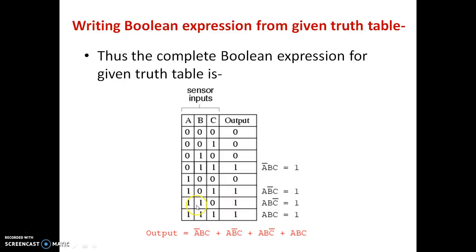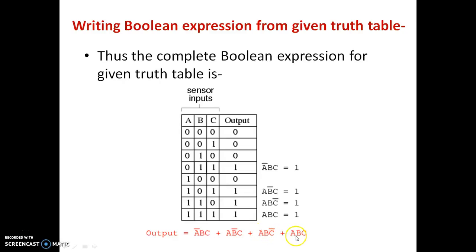For the next row, A is 1, B is 1, and C is 0. So A and B are kept in uncomplemented form and C in complemented form, which gives output as 1. Similarly, for the next row all inputs are 1, 1, 1, so all are kept in uncomplemented form and the output is 1. All these four output terms can be combined in an OR equation: A complement B C plus A B complement C plus A B C complement plus A B C.